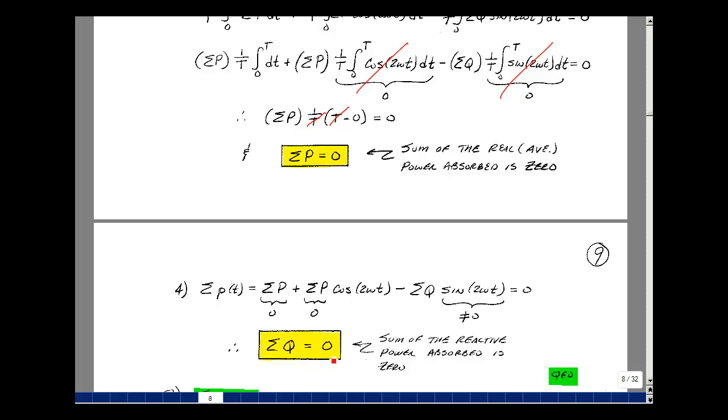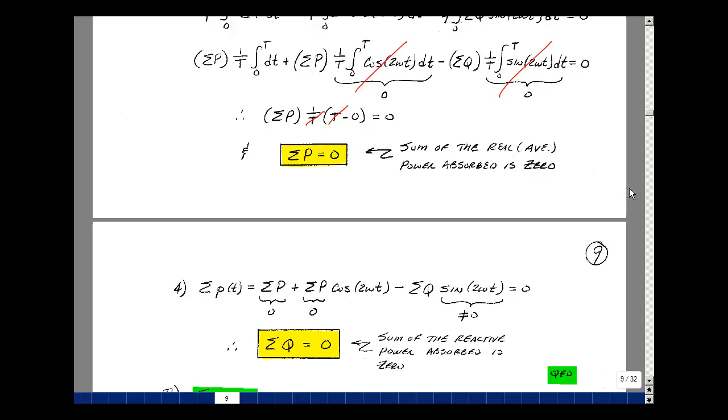Now, in both cases, we're assuming that every element absorbed power. It's a little bit easier to work with just that case, because I've got zero on one side of the equation. Now, how does this relate to the original theorem? Well, if we have elements that are absorbing power, then their real power will be positive, and their generated power will be negative,